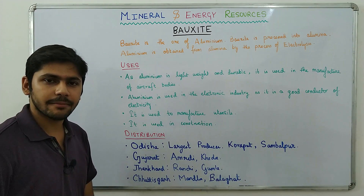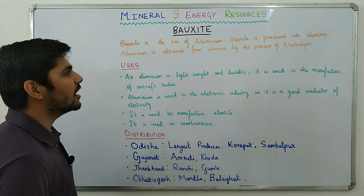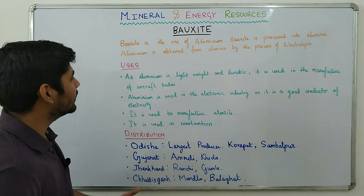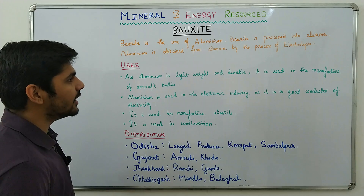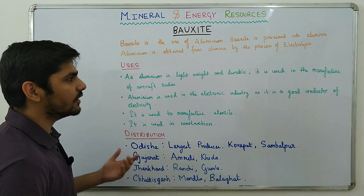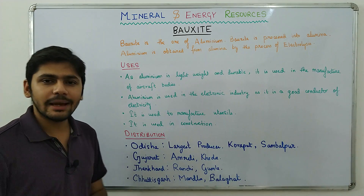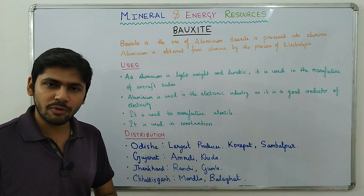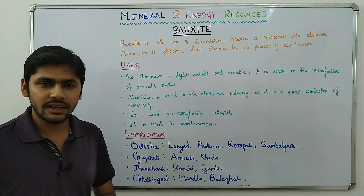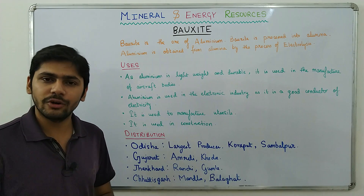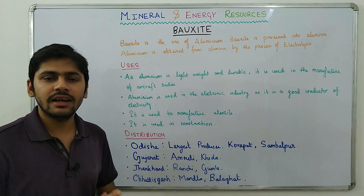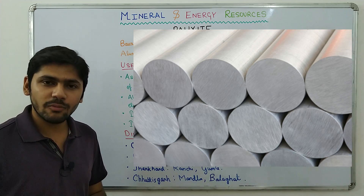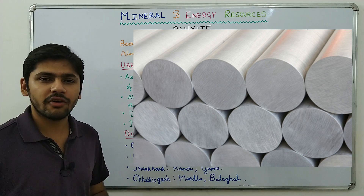Moving on to bauxite — bauxite is the ore of aluminium. Bauxite is processed into alumina, and aluminium is obtained from alumina by the process of electrolysis. In Chemistry you will study the extraction of aluminium from bauxite in detail, but here you just need to know that bauxite is the ore of aluminium.